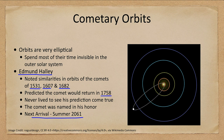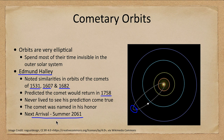Its next arrival is scheduled for the summer of 2061. Right now it is out at the very outer depths of the solar system, and it will be decades before it comes close enough to be visible again.